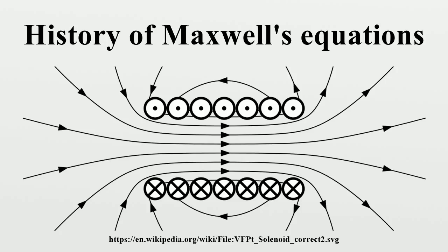The eight original Maxwell's equations can be written in modern vector notation. The notation is as follows: H is the magnetizing field, which Maxwell called the magnetic intensity; J is the current density; D is the displacement field; ρ is the free charge density; A is the magnetic potential; E is called the electromotive force by Maxwell — nowadays used for voltage, but Maxwell's meaning corresponded more to the modern term electric field; Φ is the electric potential; and σ is the electrical conductivity. Equation D, with the μv × H term, is effectively the Lorentz force.